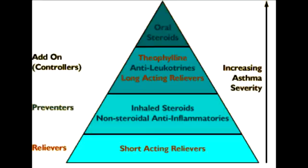If you remember from the pharmacology chapter, when the parasympathetic nervous system is stimulated, you get the mnemonic DUMBBELLS, which stands for: diarrhea, urination, meiosis, bradycardia, bronchoconstriction, excitation, lacrimation, and salivation.